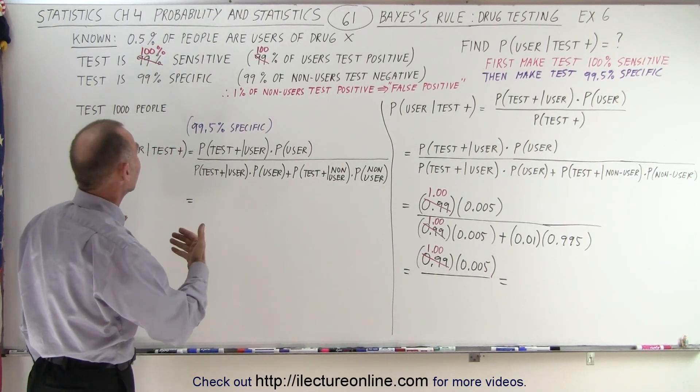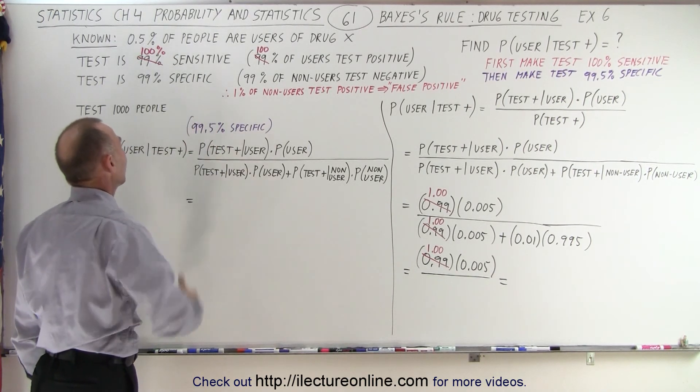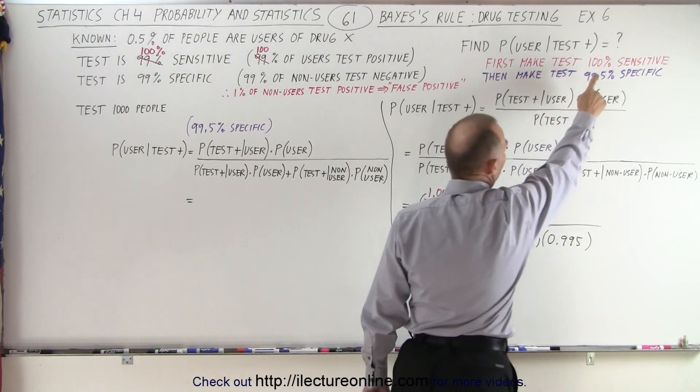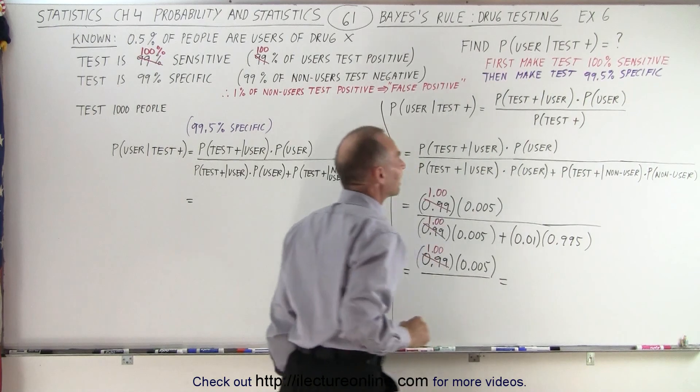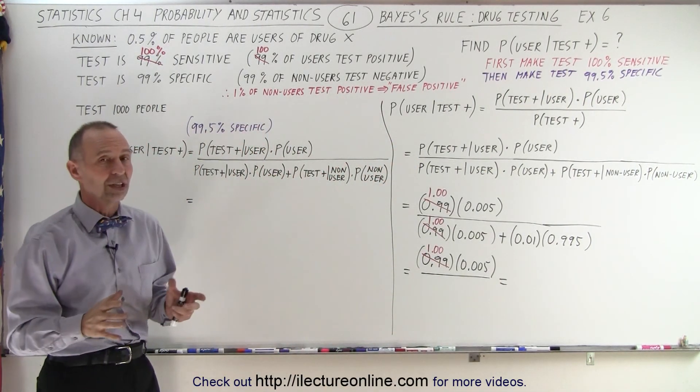What if we make the test more sensitive and what if we improve the specificity of the test? So we're going to do it one step at a time. First we'll make the test 100% sensitive, and then we'll make the test 99.5% specific to see how it changes things.